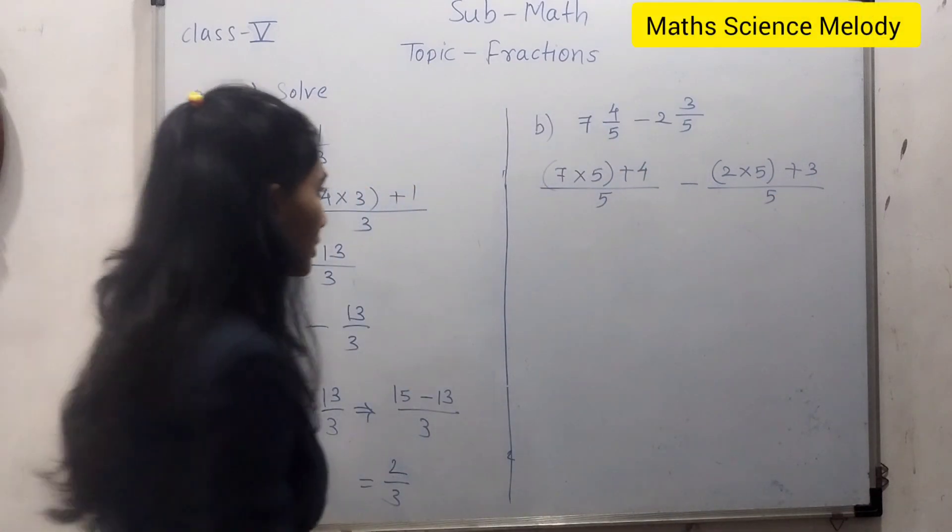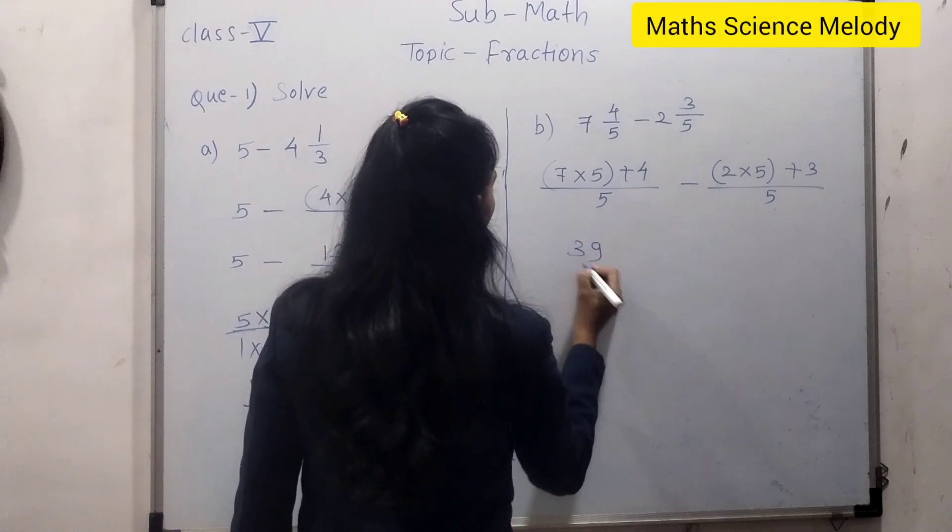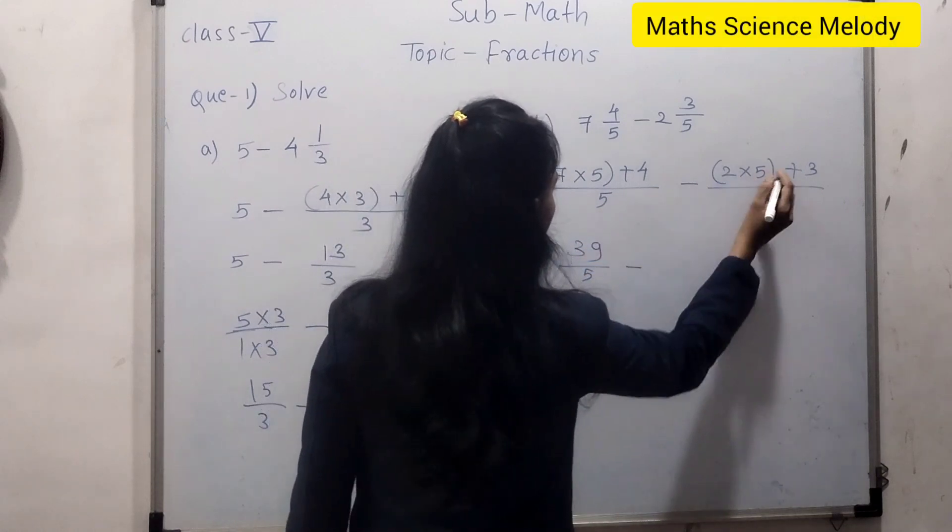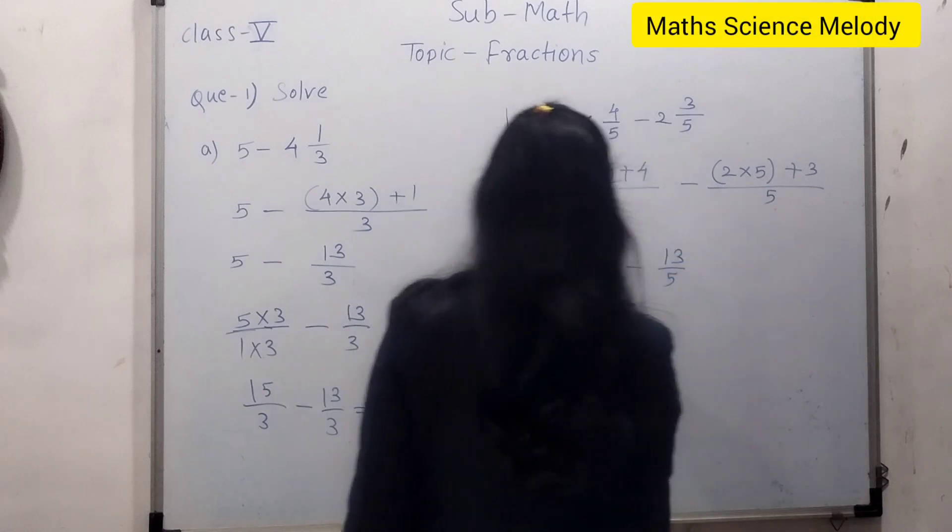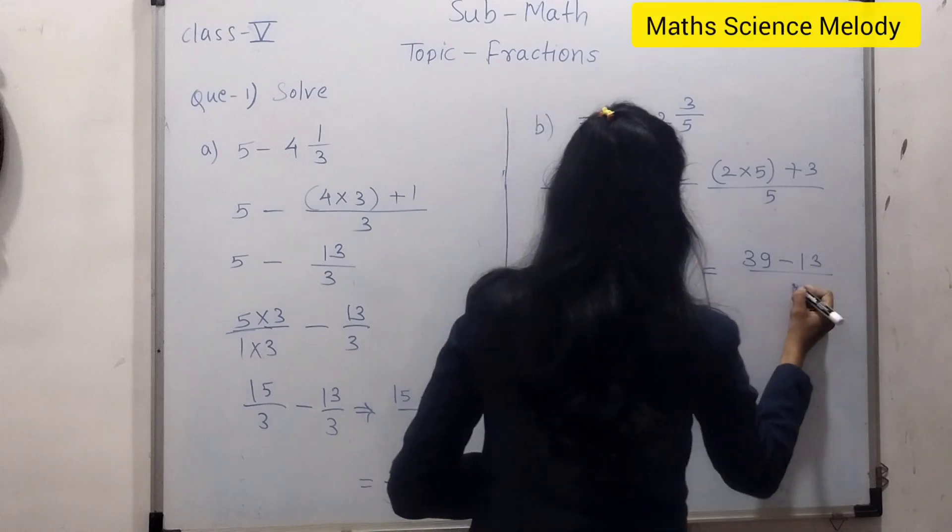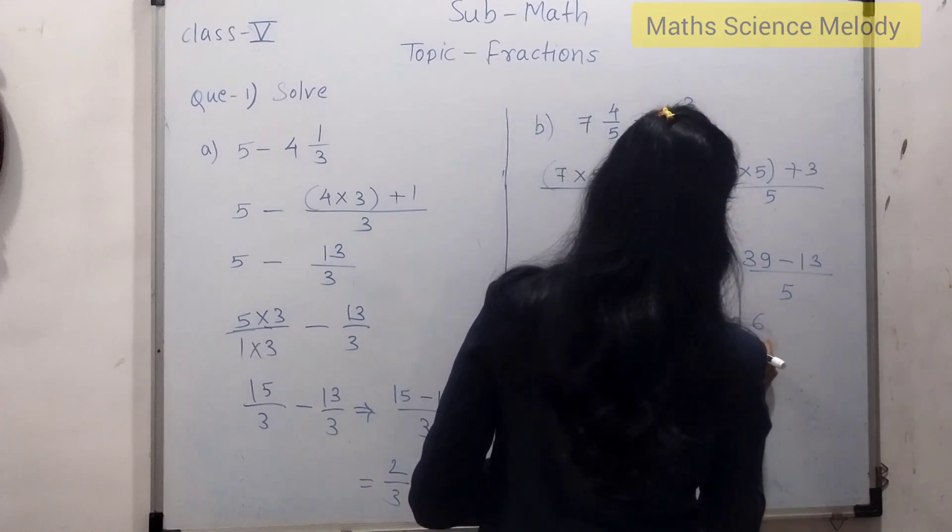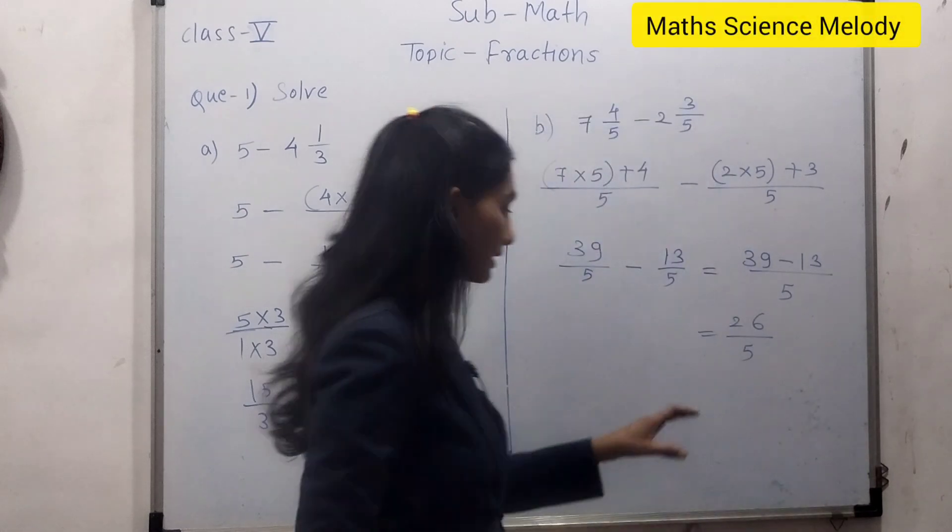Directly you will get the answer. 35 plus 4 is 39 upon 5, minus 10 plus 3 is 13 upon 5. Do the subtraction. We will get 39 minus 13, denominator is 5, which equals 26 upon 5. So this is our required answer.